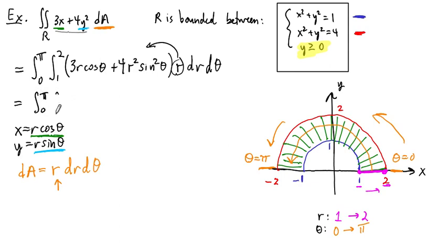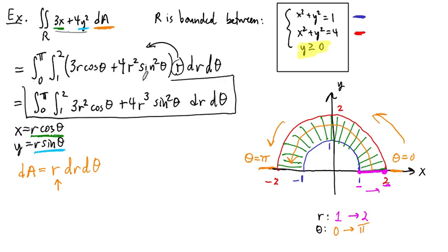But this becomes the double integral, theta's on the outside, r's on the inside, of 3r squared, cosine theta, plus 4r cubed, sine squared theta, dr d theta. And so this is the integral that you're going to want to compute. And when you work this out, you should get the answer, the same answer as it says in the notes.